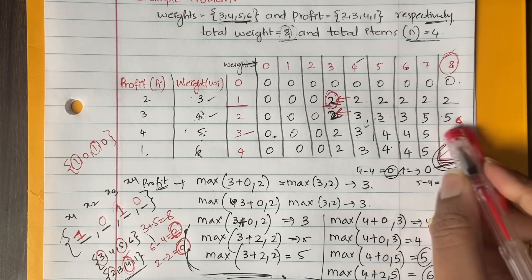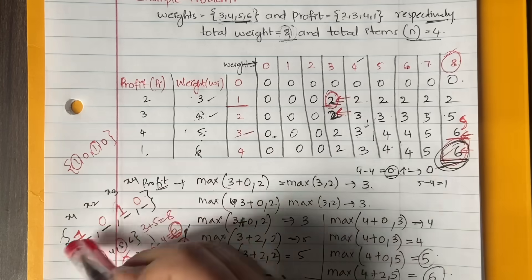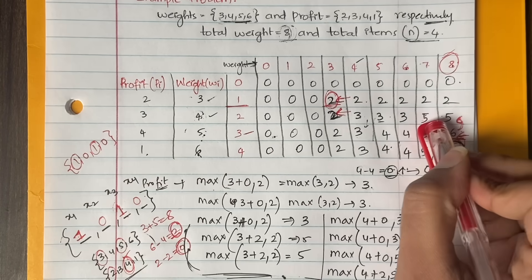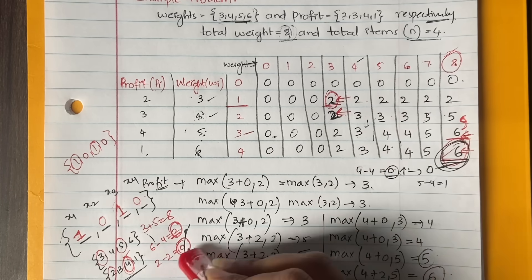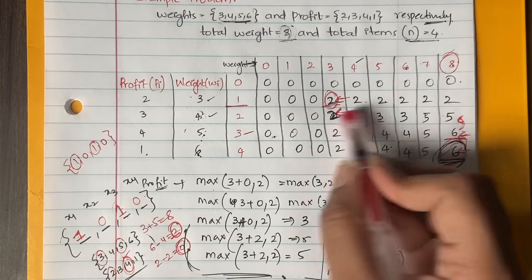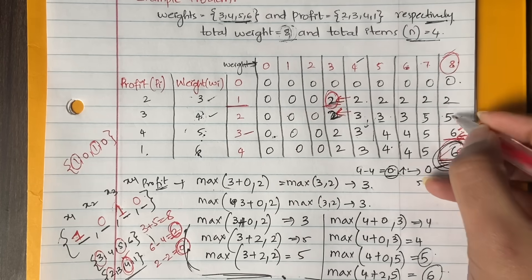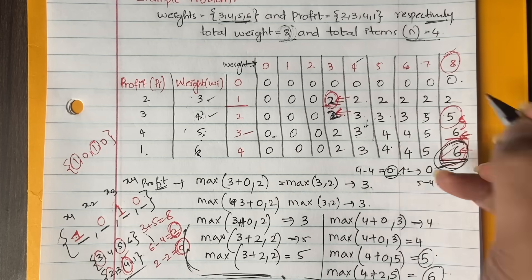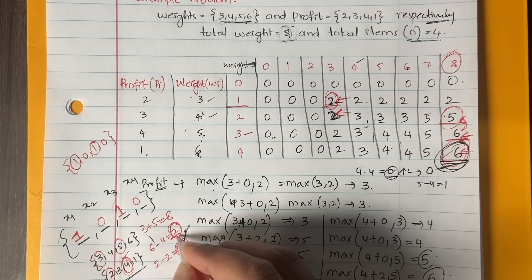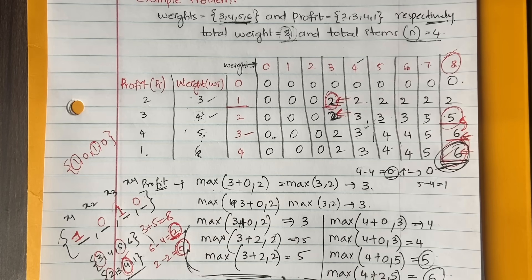The key is filling the table and then moving the pointers. Whenever you don't see a change in value, you can take that item into the bag. Whenever you see a change, calculate the remaining profit and jump to that value. I hope this video is clear. If you still have questions, let me know in the comment section and I'll try to clear your doubts. Thanks for watching and see you in the next video.